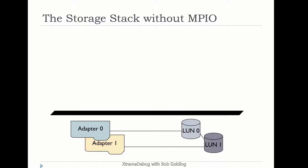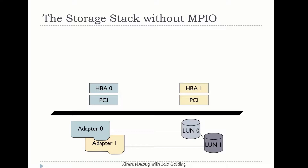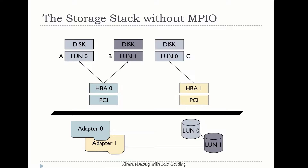Now, the storage stack without MPIO: in this example, we have two adapters, adapter zero and adapter one. Both adapters are present with the bus wired, so LUN zero and LUN one are seen on both adapters. We have HBA zero, HBA one, disk zero, disk one on each adapter — represented as A, B on HBA zero, and C and D on HBA one. Without MPIO, the storage stack is going to see four devices.